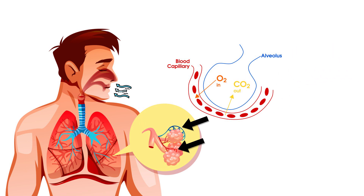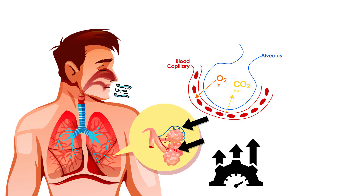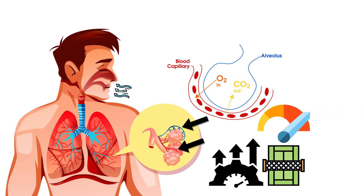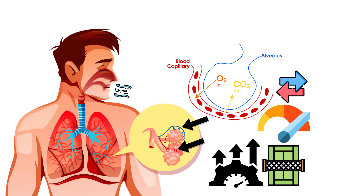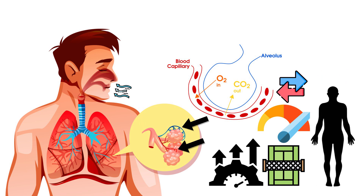The entire process is highly efficient due to the extensive surface area of the alveoli, which is about the size of a tennis court when spread out. This large surface area ensures maximum gas exchange, vital for maintaining the body's oxygen levels and eliminating carbon dioxide.